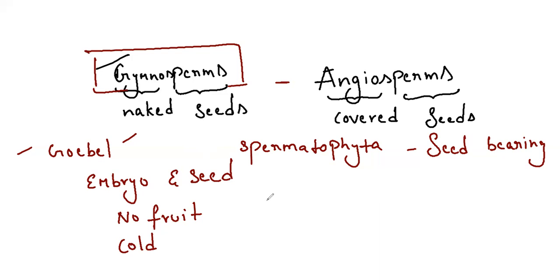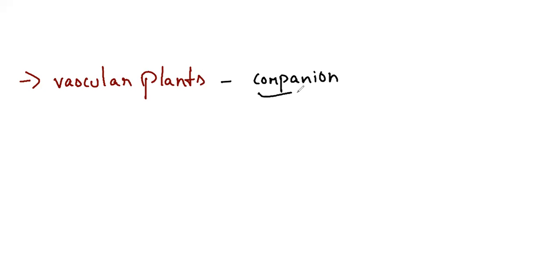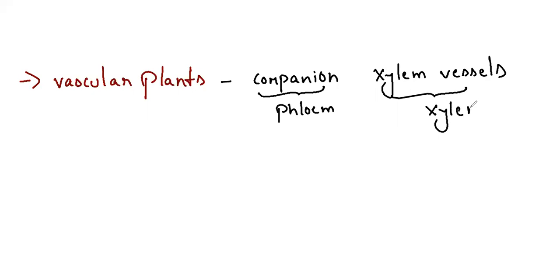All gymnosperms are vascular plants. However, they lack two things: companion cells of phloem, and xylem vessels. These two structures are present only in angiosperms and not in gymnosperms. But exceptions exist — three gymnosperm plants do possess true vessels: Gnetum, Ephedra, and Welwitschia. These three contain true xylem vessels.